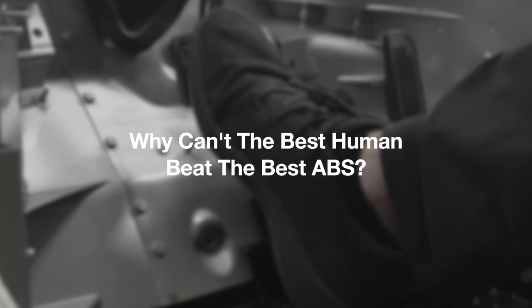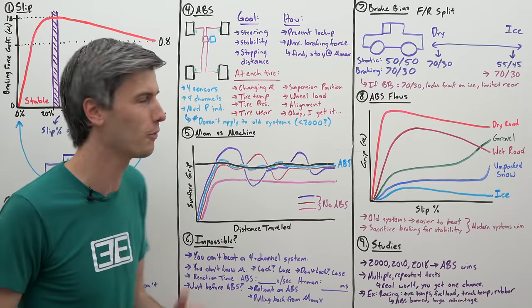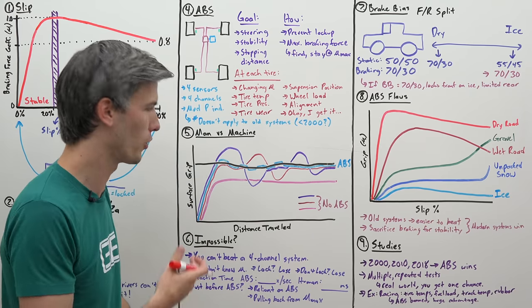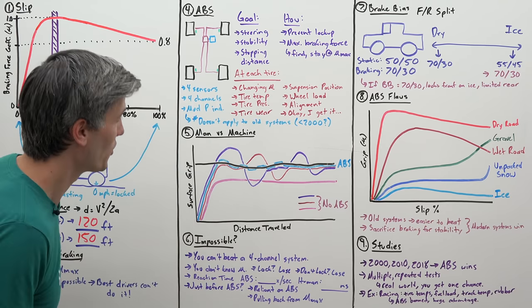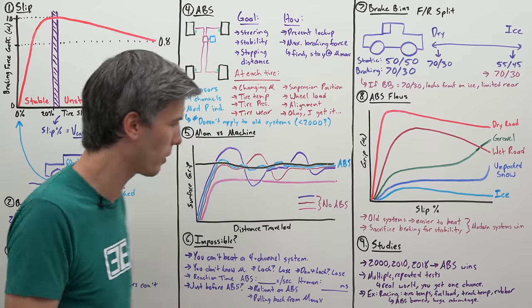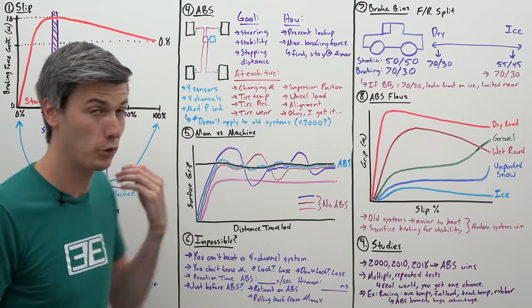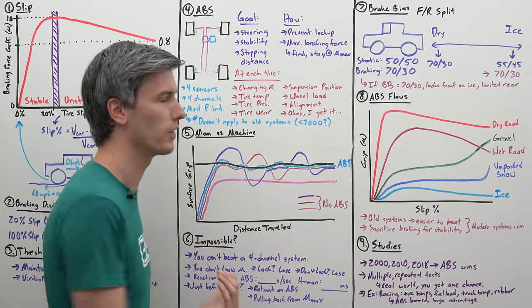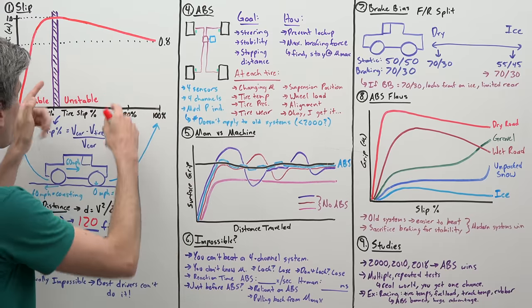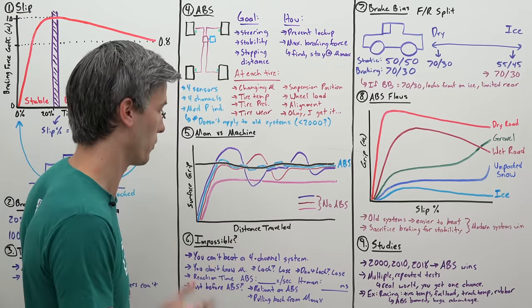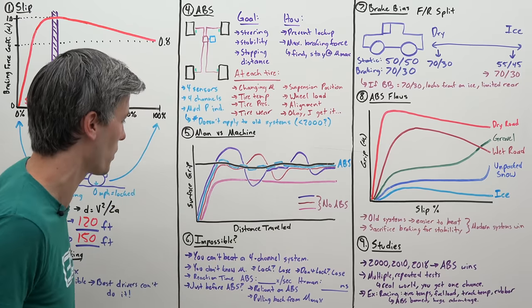So why do I say it's virtually impossible for you as a driver to beat ABS using threshold braking? Well, first of all, you can't beat a four-channel system. It's able to look at each individual tire and brake them each individually. You are not. You get one brake pedal. So you're just not going to beat that. Plain and simple. Next, you don't know what the friction of the road is. You don't know. You're looking at it. You can see it, but you have no idea what the grip is. You have to press the brake pedal and you have to make some assumption. So if you lock up, well, you lose. ABS won. If you don't lock up, then that means you are probably leaving something on the table because you didn't get into that unstable region. So you're somewhere over here thinking, okay, I found the perfect spot, but in reality, you're leaving some braking on the table. So if you don't lock up, you also lose. It's just an impossible situation to pretty much win.